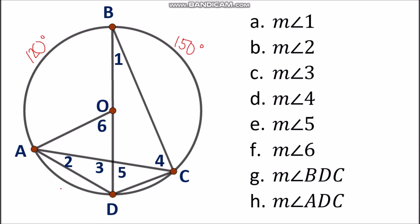We will use the given to find the measurements of other arcs. Looking at the circle, arc BAD is a semicircle and arc BCD is also a semicircle, each measuring 180 degrees. Subtracting 120 from 180 gives us arc AD = 60 degrees. Subtracting 150 from 180 gives us arc DC = 30 degrees.